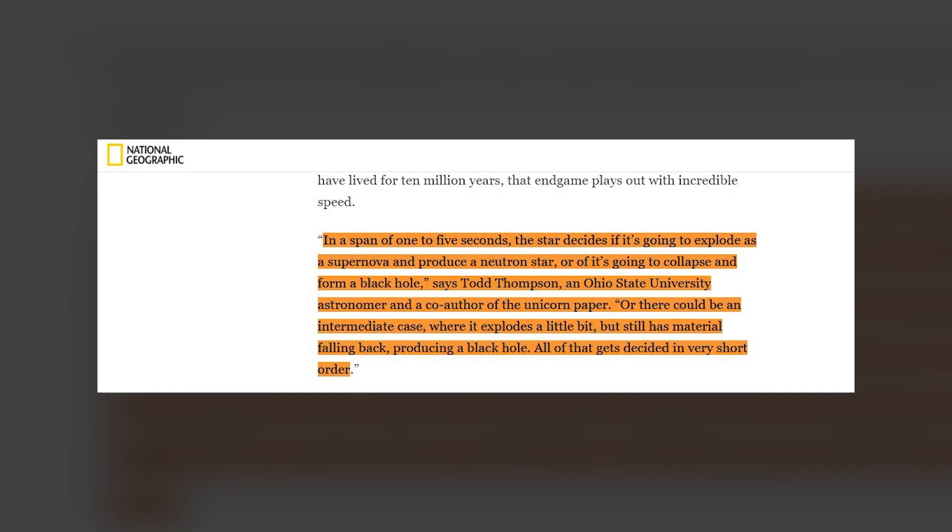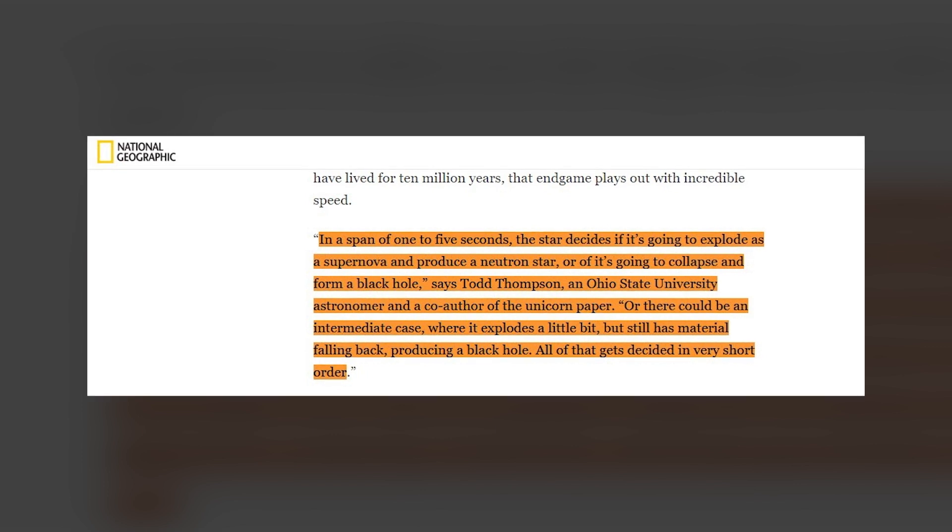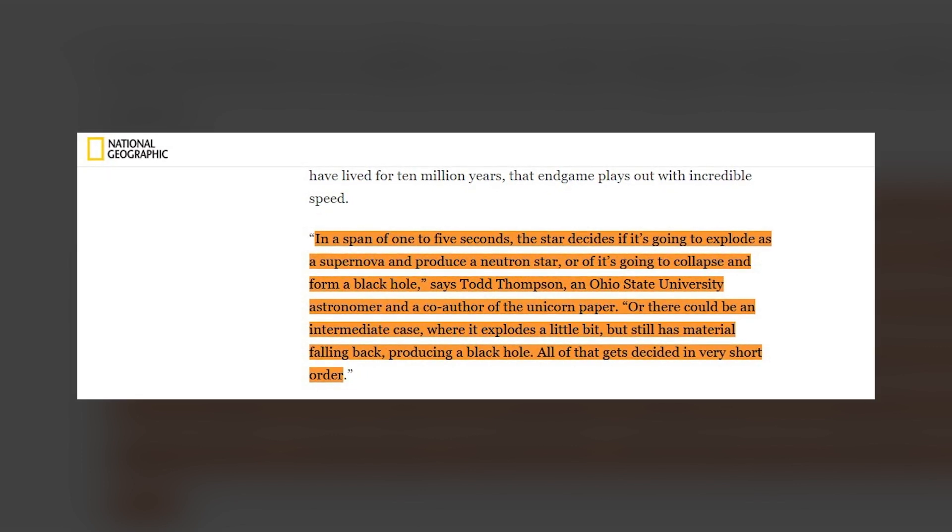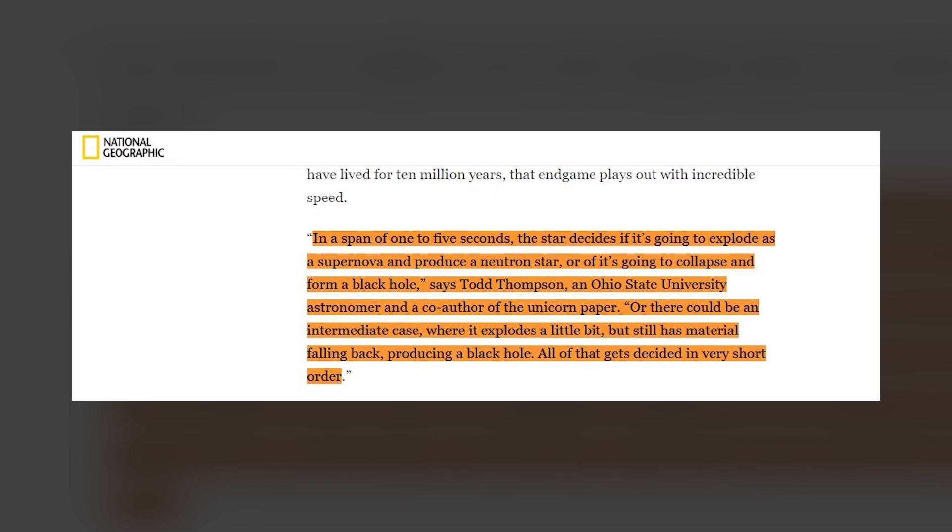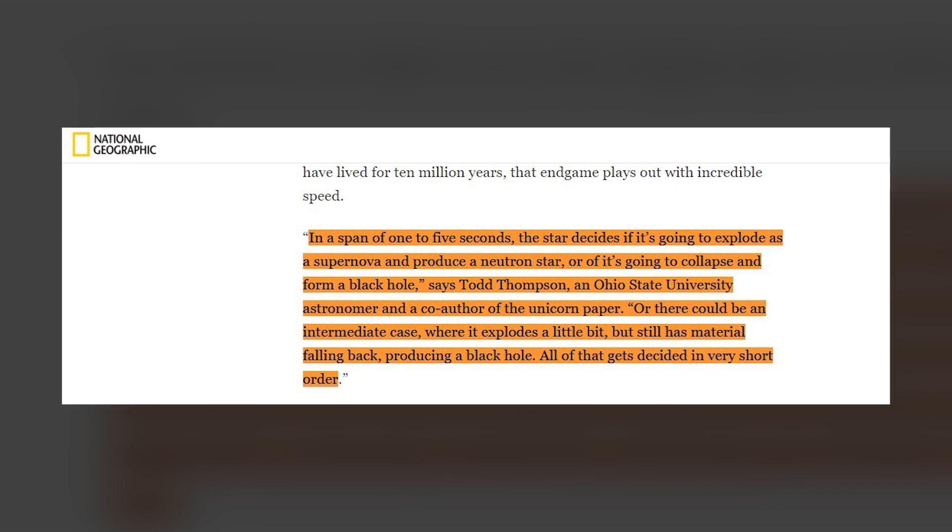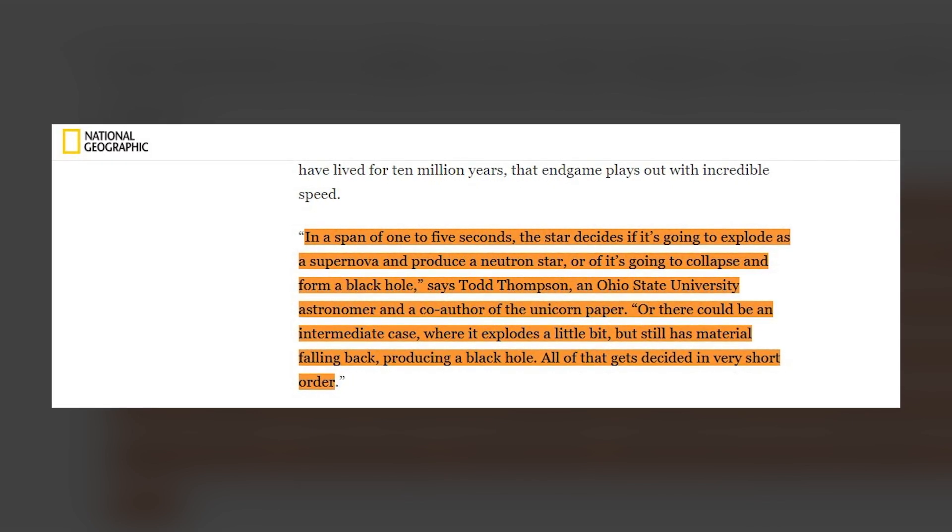Todd Johnson, an Ohio State University astronomer and co-author of the unicorn paper, was quoted saying, in a span of one to five seconds, the star decides if it's going to explode as a supernova and produce a neutron star, or if it's going to collapse and form a black hole. Or there could be an intermediate case where it explodes a little bit, but still has material falling back producing a black hole. All of that gets decided in very short order.